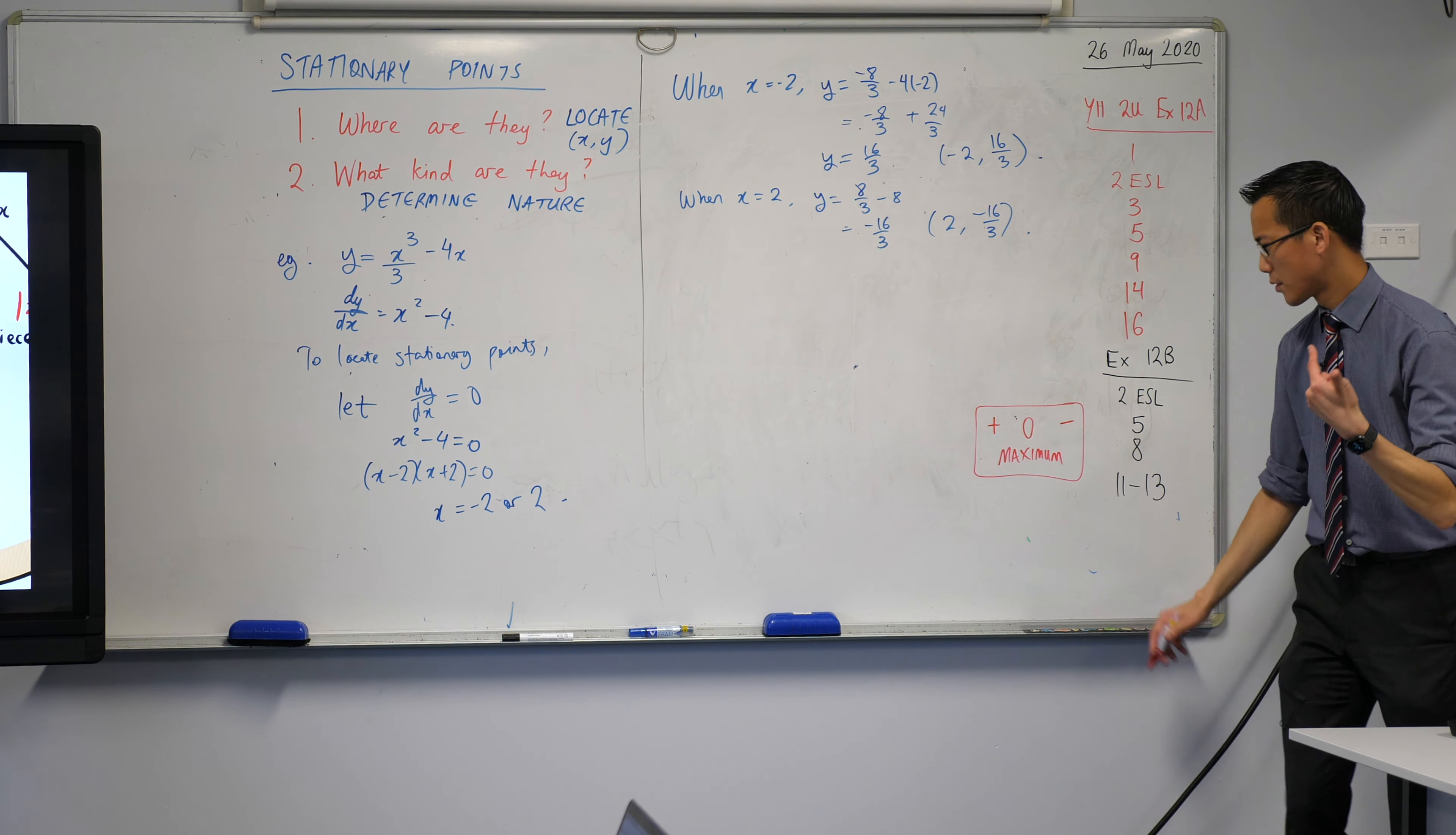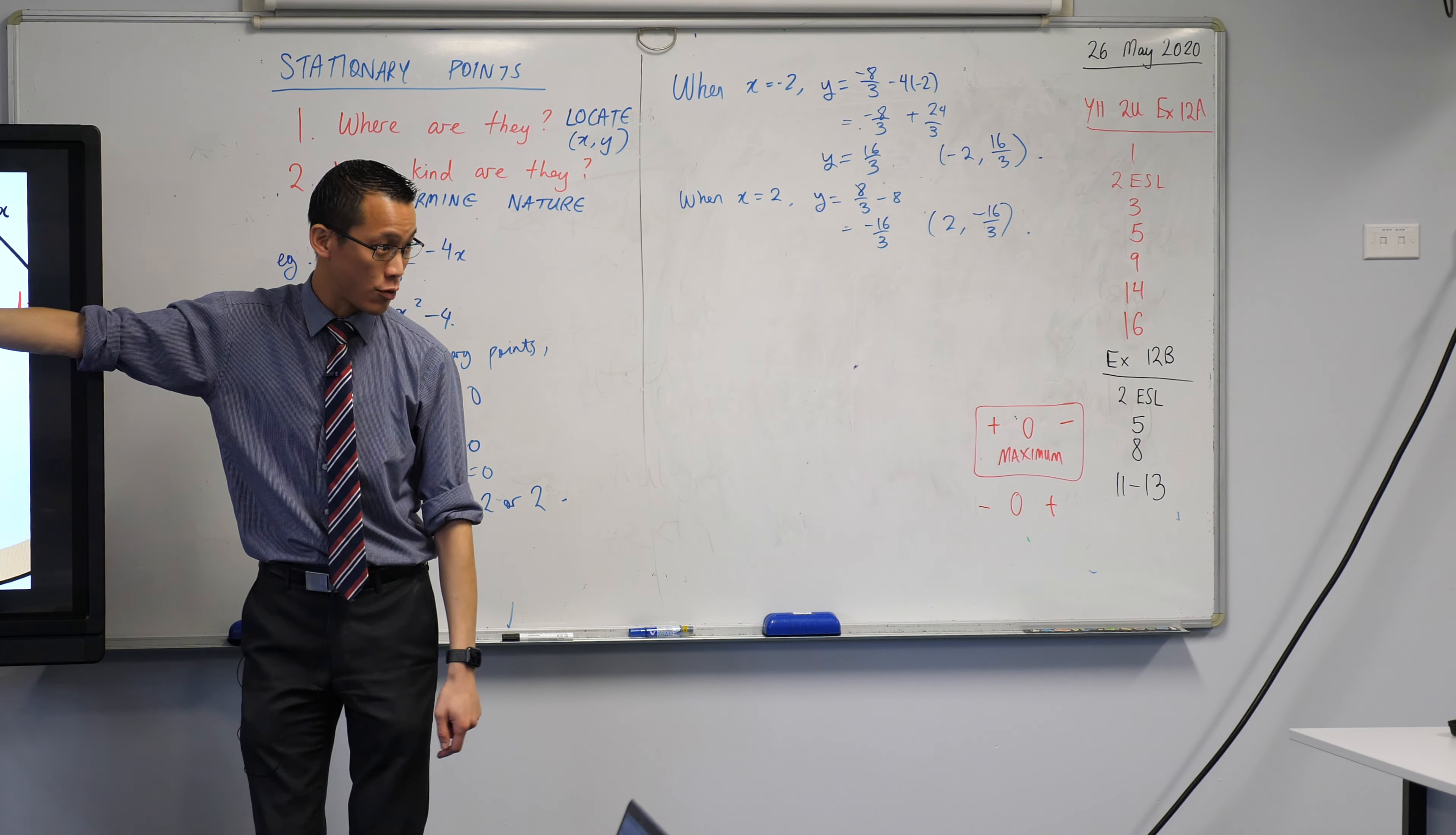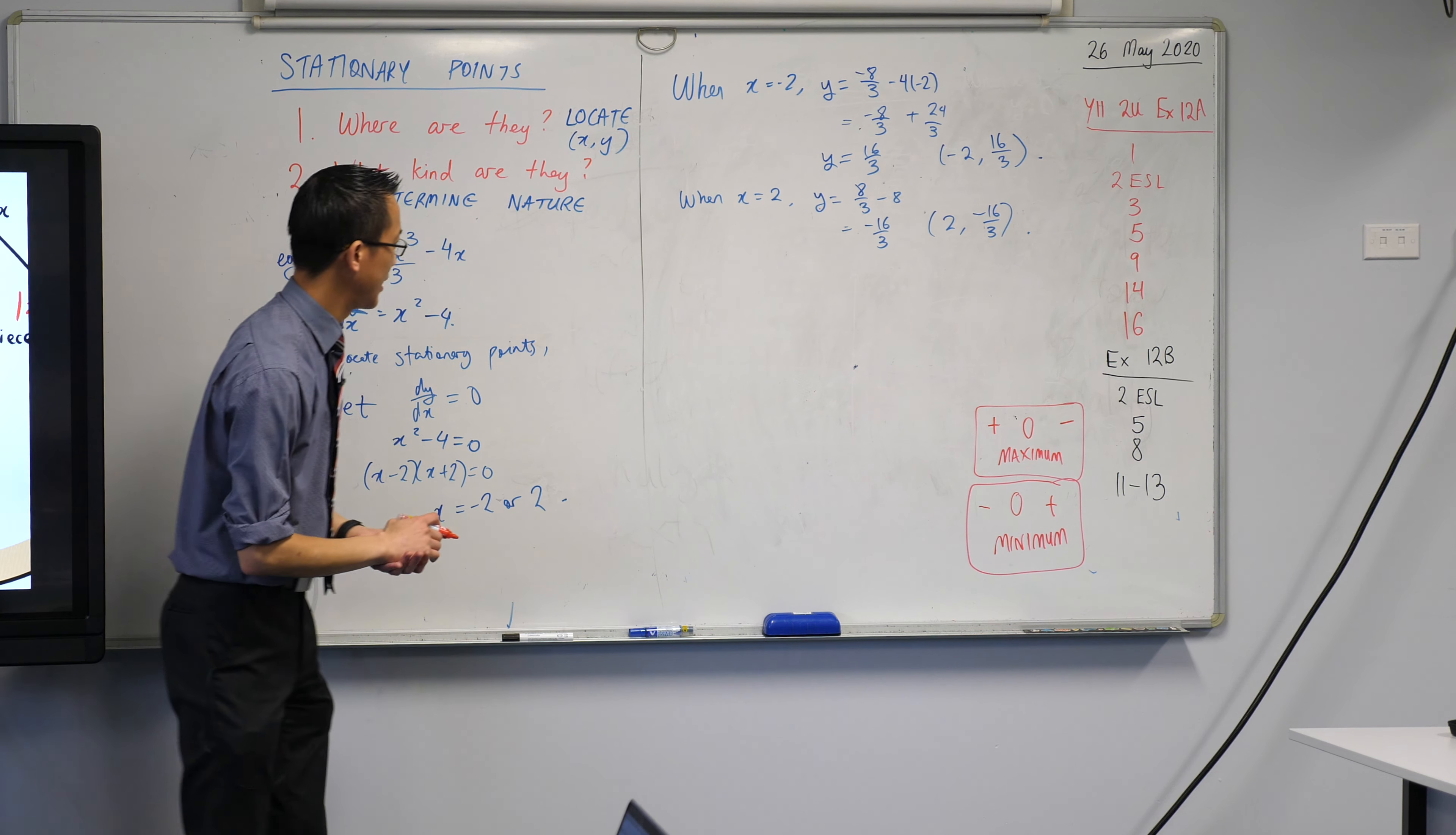What if I switch the order? What if it was negative, then zero, then positive? Which one of those is it? It's the regular looking parabola. Decreasing, zero, increasing. This is not a maximum, it's a minimum. So I'm looking at what's the derivative doing just to the left and just to the right.